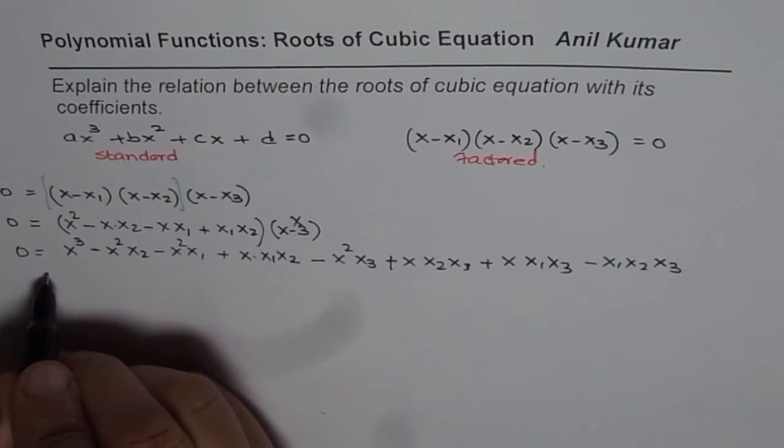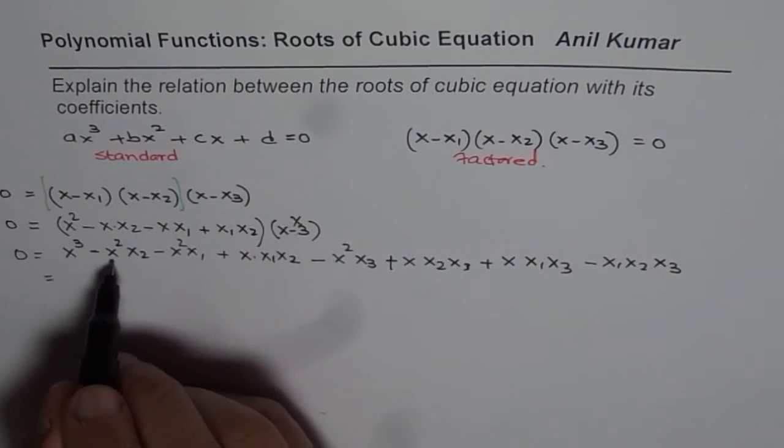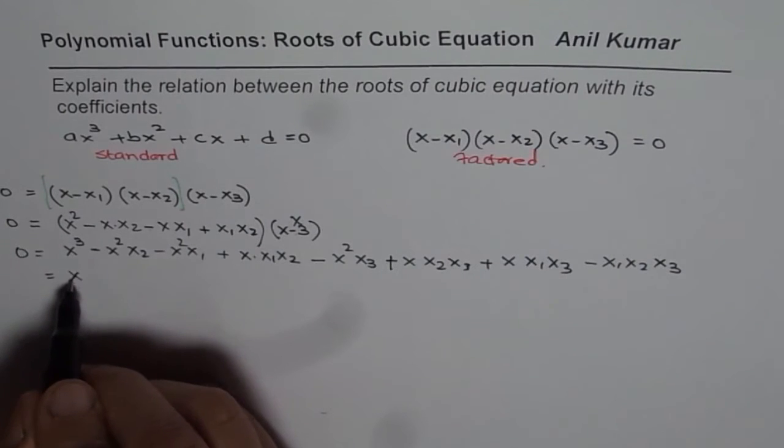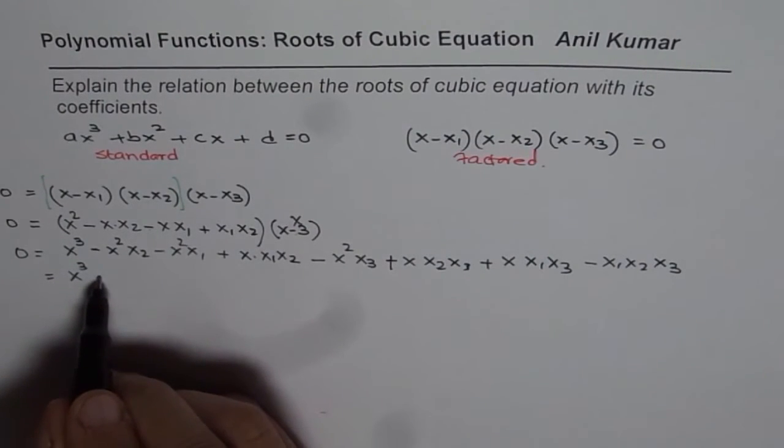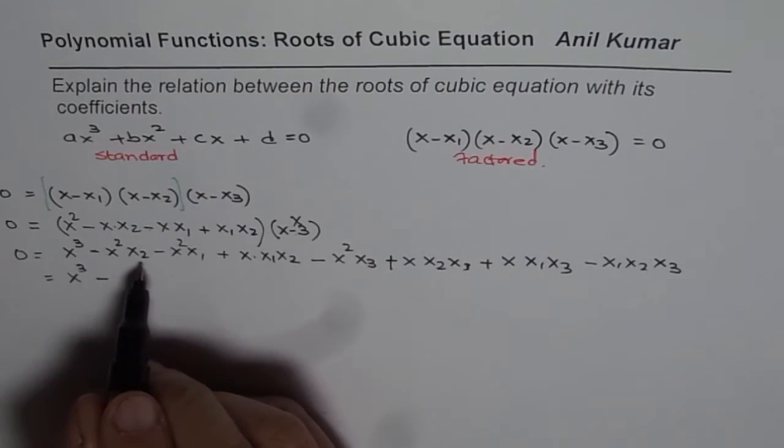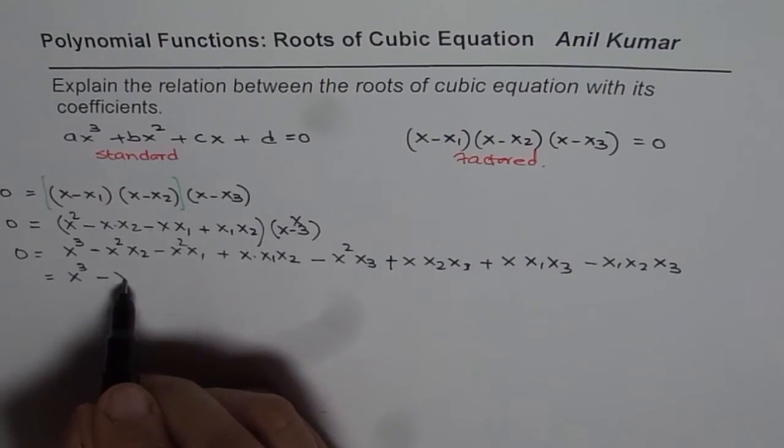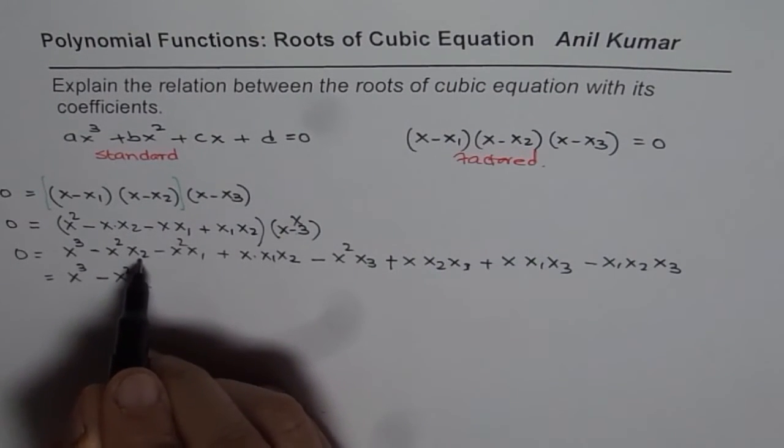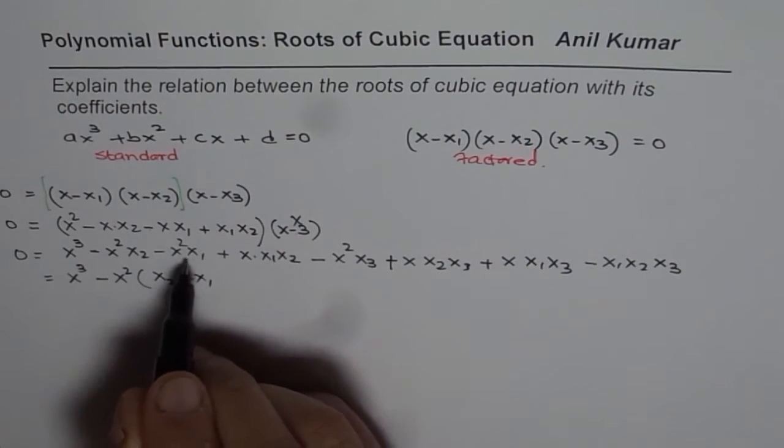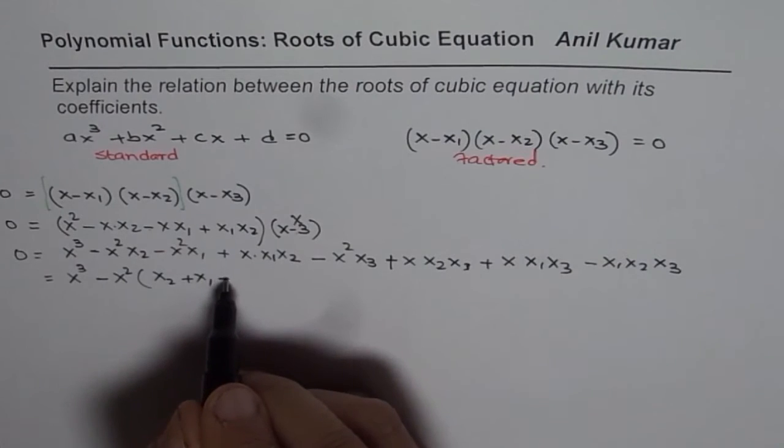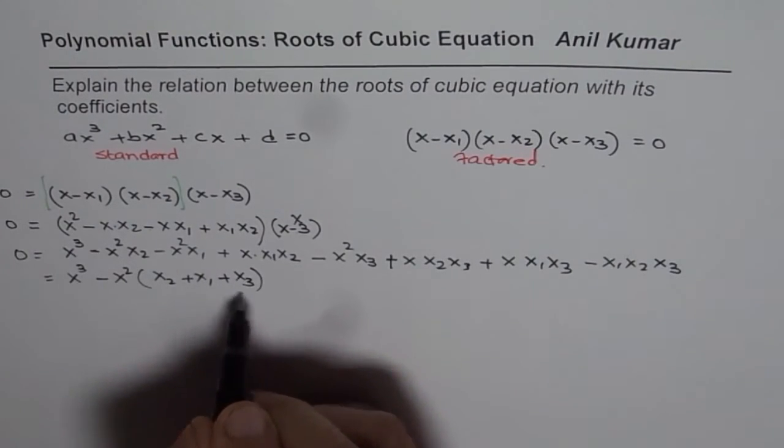Now let us factor and write simplified form. So x² we have here. So for x² we have if I take -x² common we get x₂ + x₁ and with x² we have x₃ also. So 3 roots, sum of 3 roots.